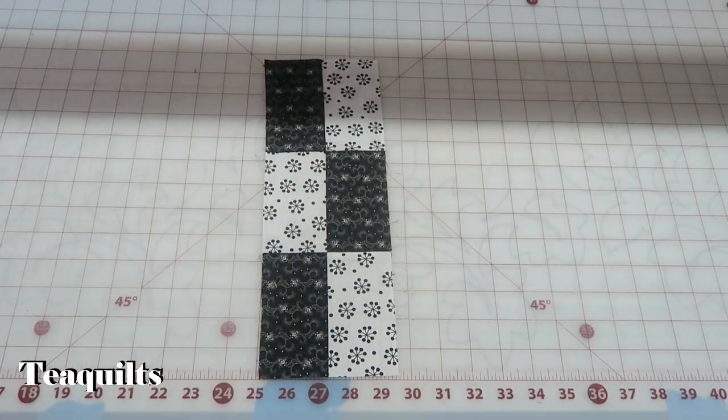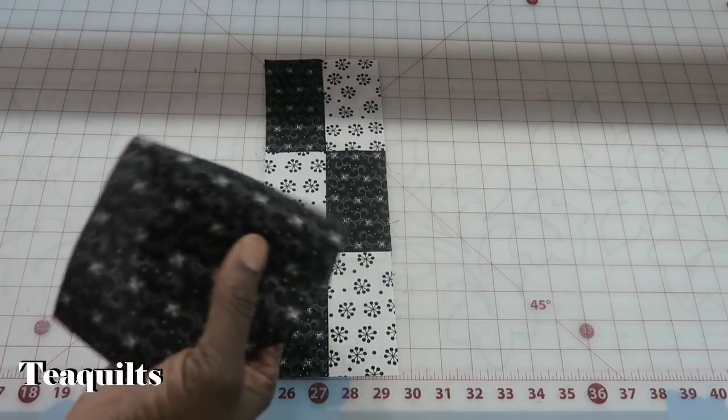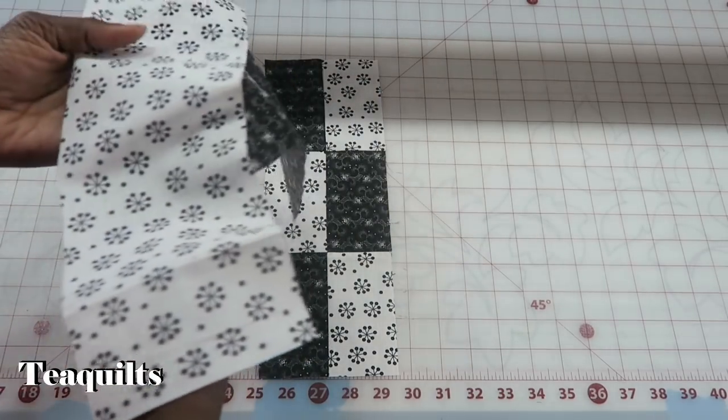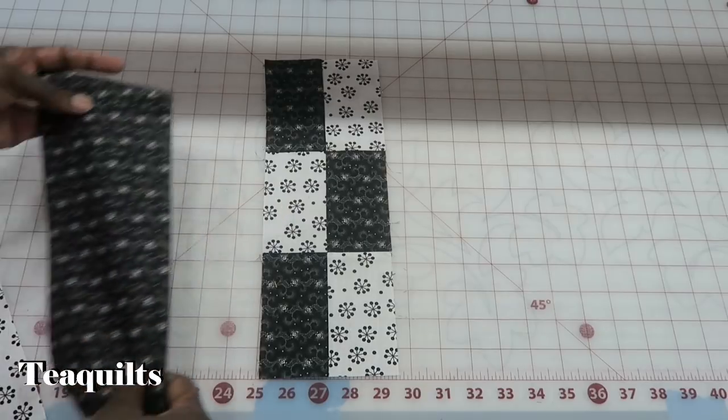So once we get those pieces sewn back together we want to bring in our two pieces that we cut four and a half by twelve and a half.